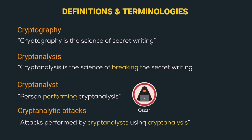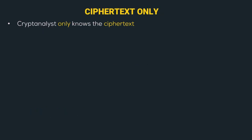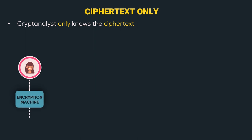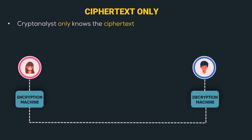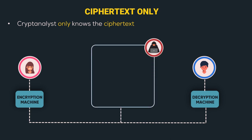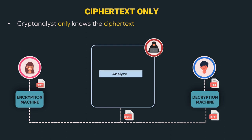Let's go to the first attack, which is the ciphertext only attack. Here the cryptanalyst only knows the ciphertext. Alice uses the encryption machine to convert plaintext to ciphertext. Oscar receives the ciphertext along with Bob, and Bob uses his decryption machine to decrypt the ciphertext and obtain the plaintext. In the ciphertext only attack, Oscar's analyze function receives only the ciphertext to get the plaintext. Hence this attack is the most difficult to implement, as there is no information apart from the public ciphertext.